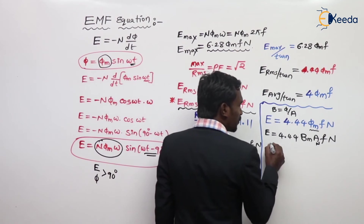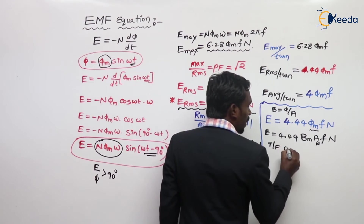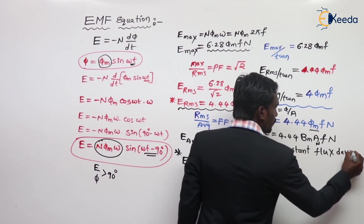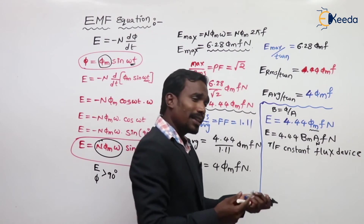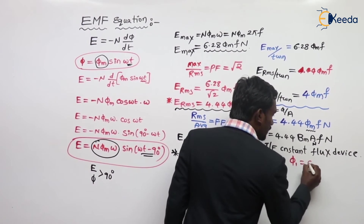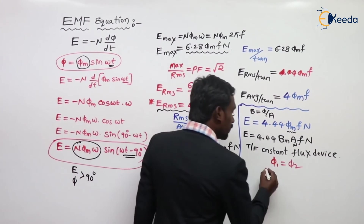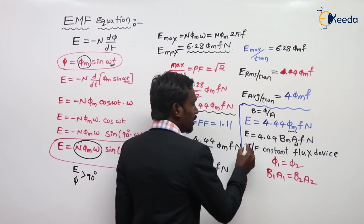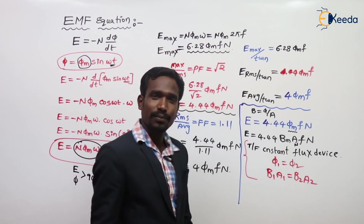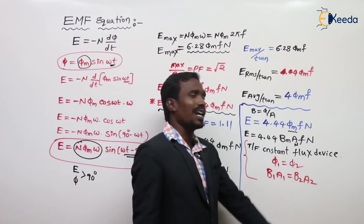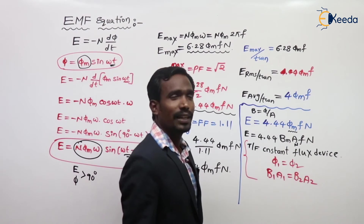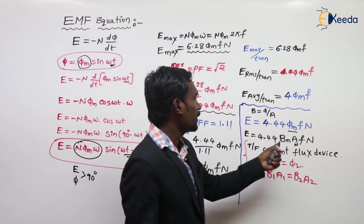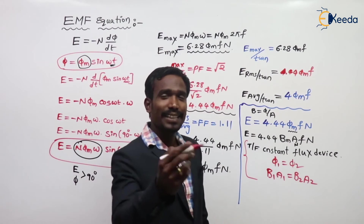The transformer is a constant flux device — flux is constant, meaning φ1 = φ2, which means B1 A1 = B2 A2. They may ask you problems based on this formula. Since flux is constant, both B and A are also constant.